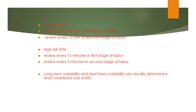Fetal heart rate monitoring guidelines: for low risk, review every 30 minutes in the first stage of labor and every 15 minutes in the second stage. For high risk EFM, review every 15 minutes in the first stage of labor and every 5 minutes in the second stage. Long-term variability and short-term variability are visually determined and considered one entity.